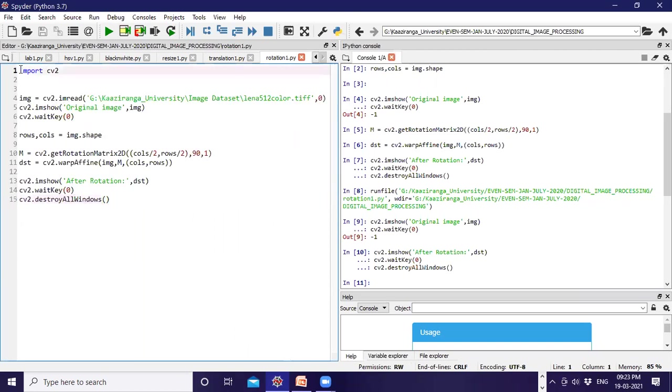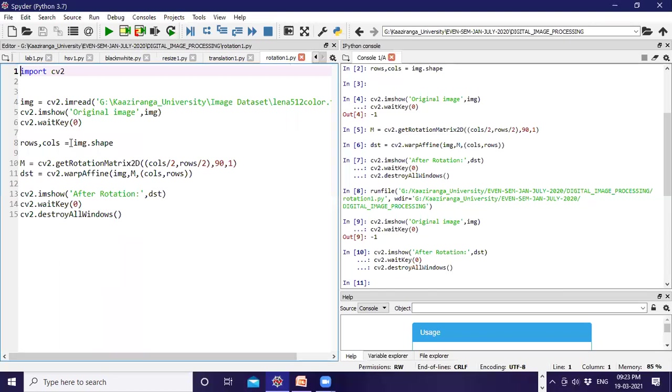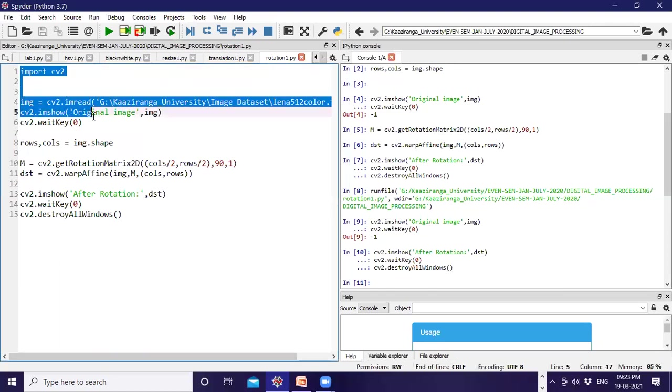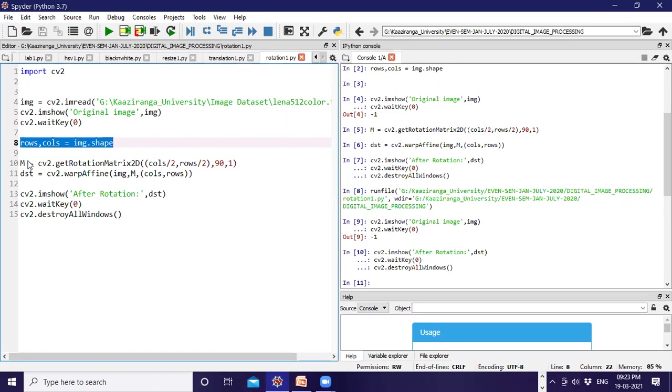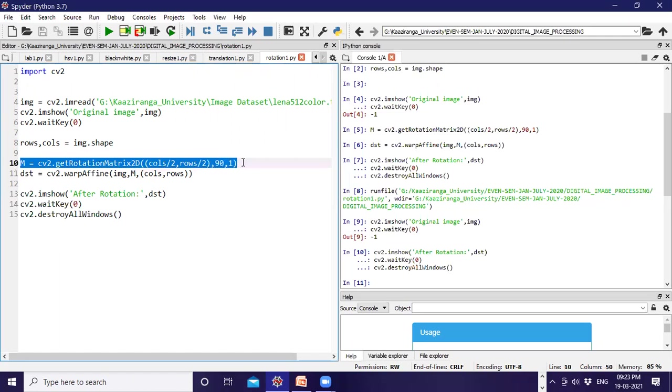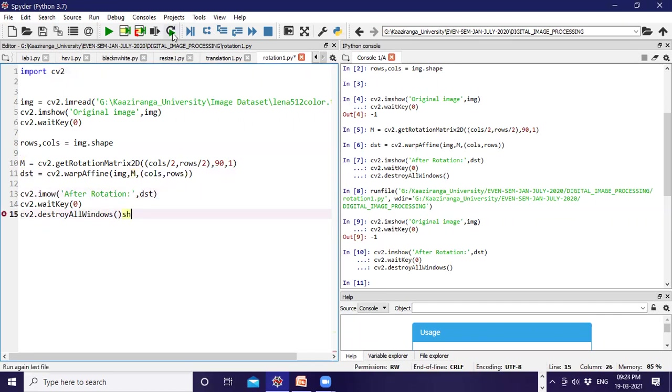Now it is clearly visible. Import cv2, then imread to read the image and display the original image. Then rows and columns from img.shape. This is the transformation matrix with cols/2, rows/2 as the center and 90 degree rotation. Then dst equals cv2.warpAffine with the image as first parameter, M as the transformation matrix, and then cols and rows that we calculated here. Then we're ready to display the image after rotation.